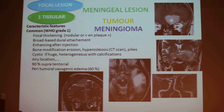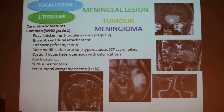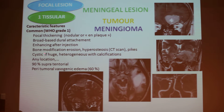The meningioma is very well defined; generally it's a focal thickening of the dura, it can be nodular or in plaques. It is a broad-based tumor attachment. It enhances a lot after injection unless it is completely calcified. There are bone modifications near the meningioma, like hyperostosis or spicules, which are very specific of meningioma.